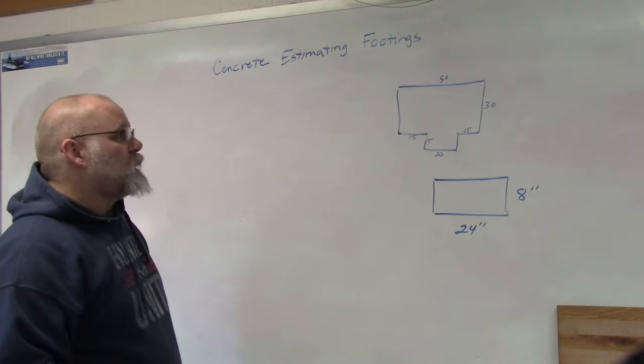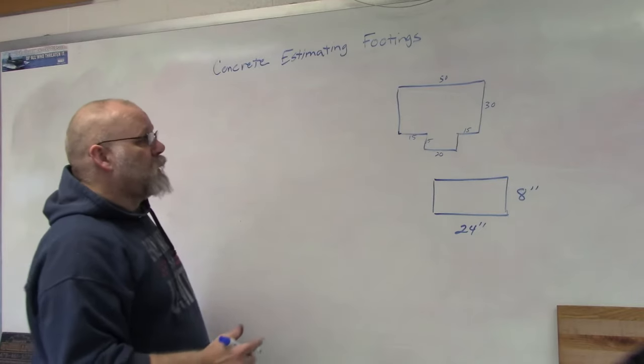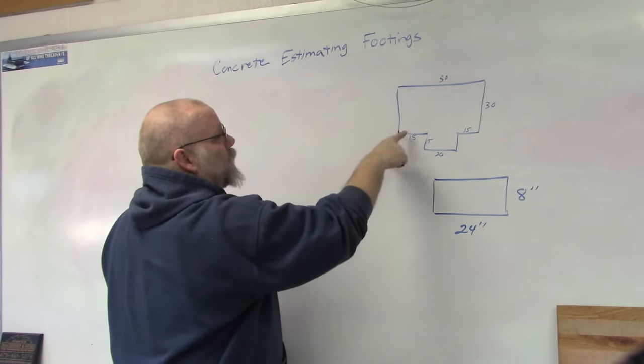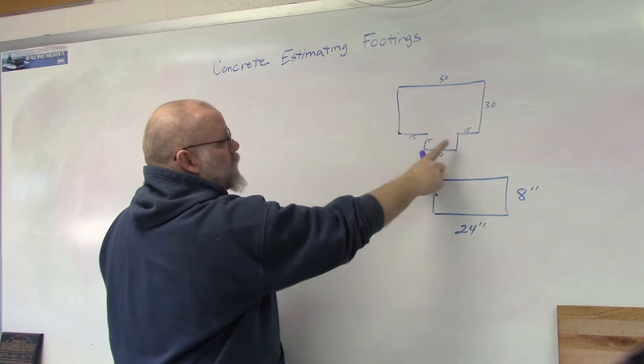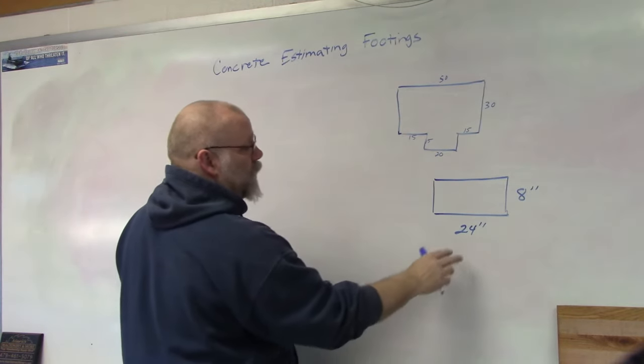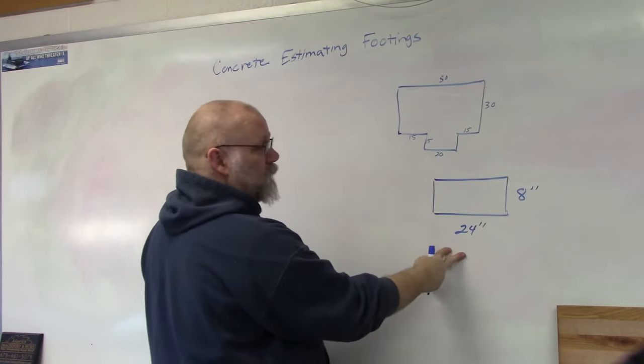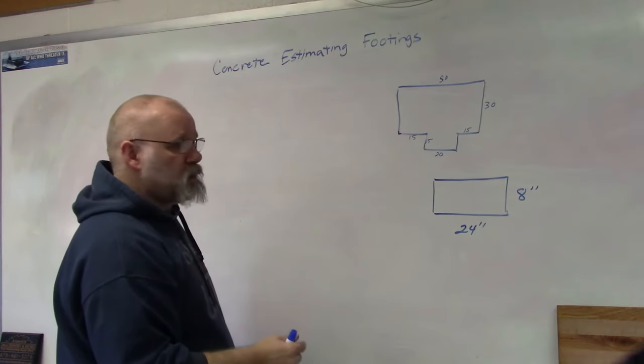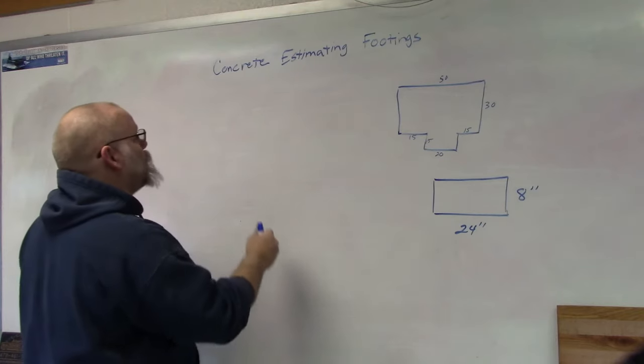So here we have a structure that's 50 by 30, and then it's got this front that sticks out 15 feet. We're going to put an 8 by 24 footing underneath the whole structure.